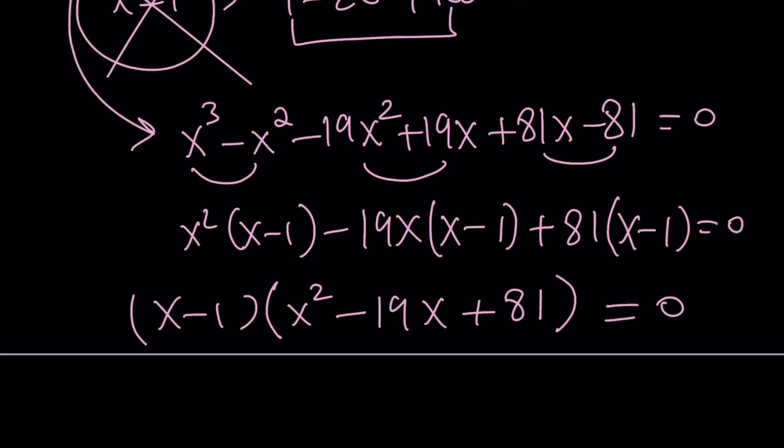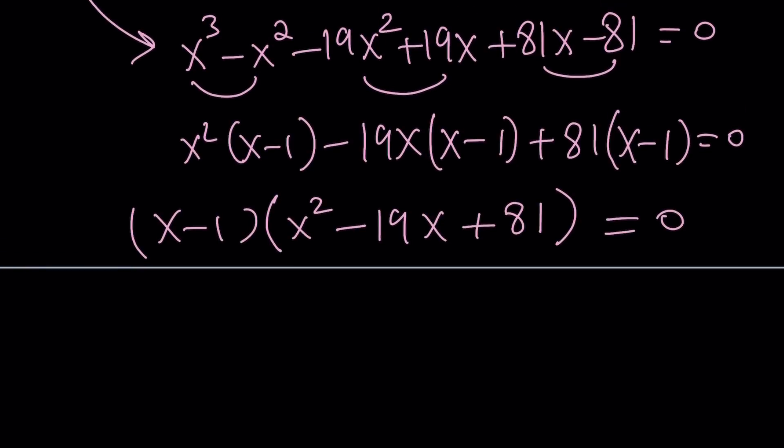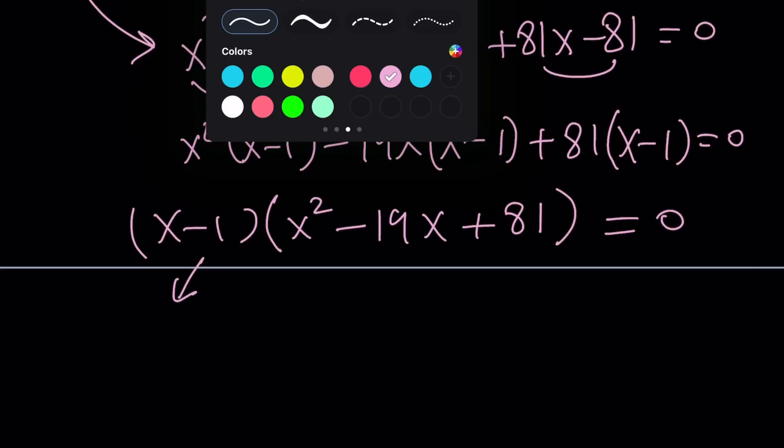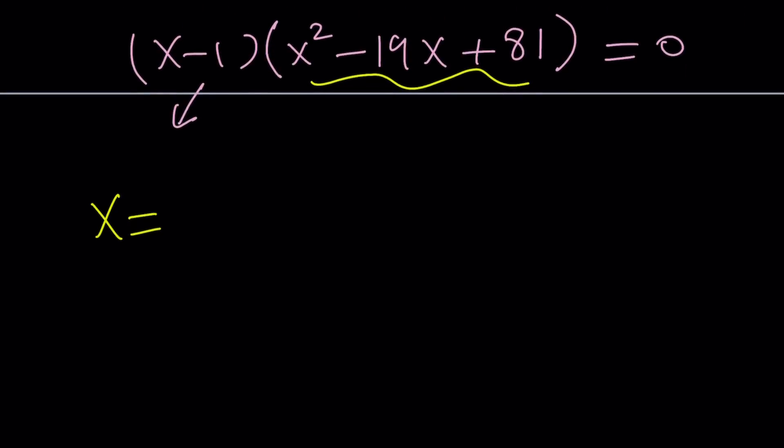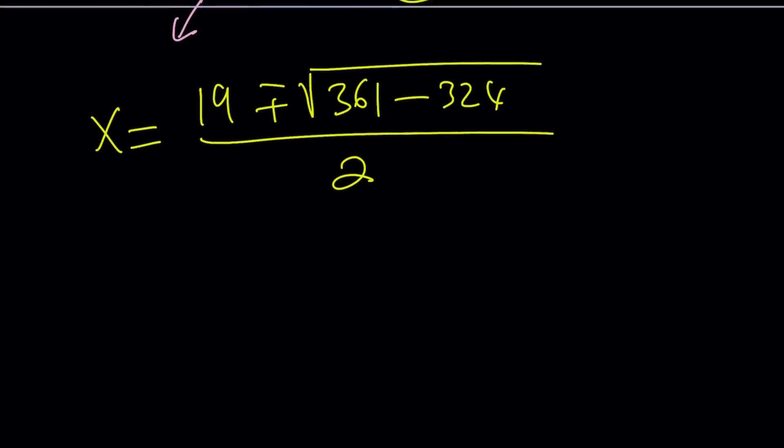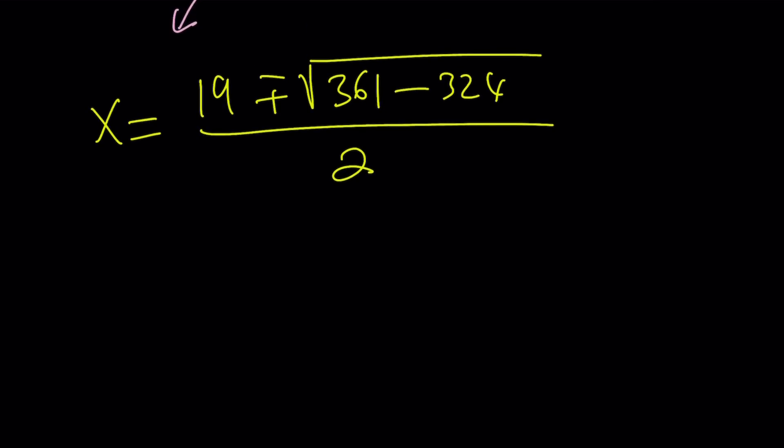An interesting equation that contains 19 and 81. We know that x equals 1 is not going to work, so don't worry about that. Let's focus on the quadratic. To solve this quadratic, let's use the quadratic formula: negative b plus minus the square root of b squared, which is 361, minus 4ac. If you multiply 81 by 4, you're going to get 324. And if you subtract these two numbers, you're going to get 37.